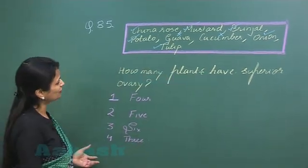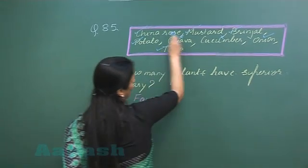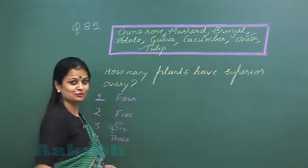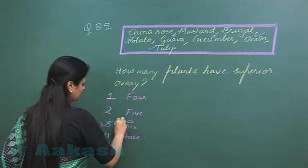So how many of them have superior ovary? One, two, three, four, five, six. So the right option here is option number three.